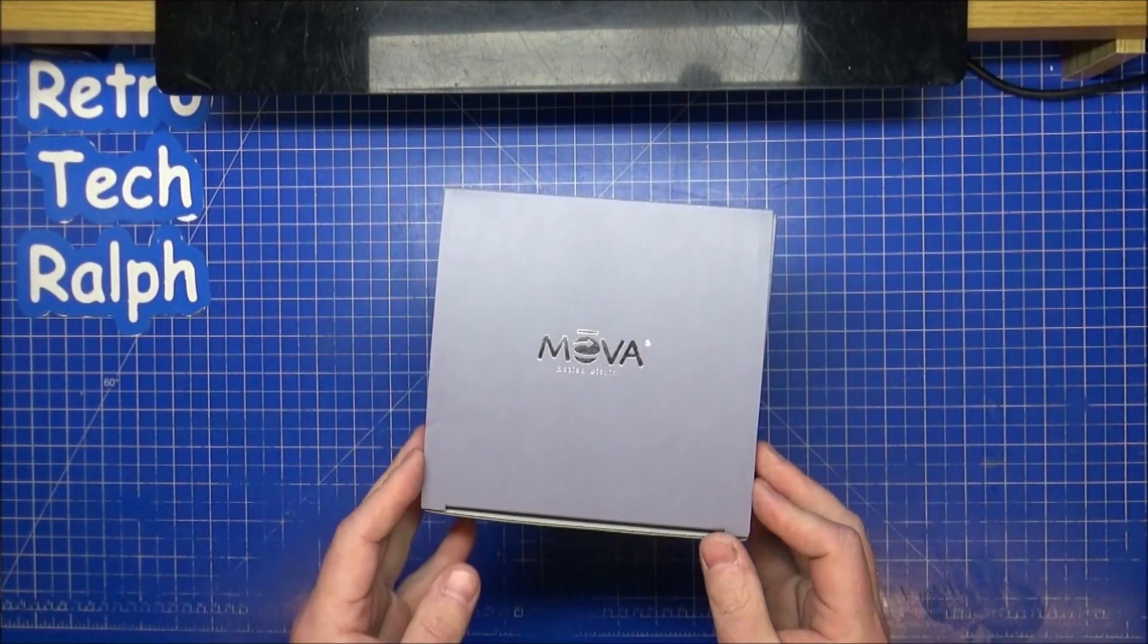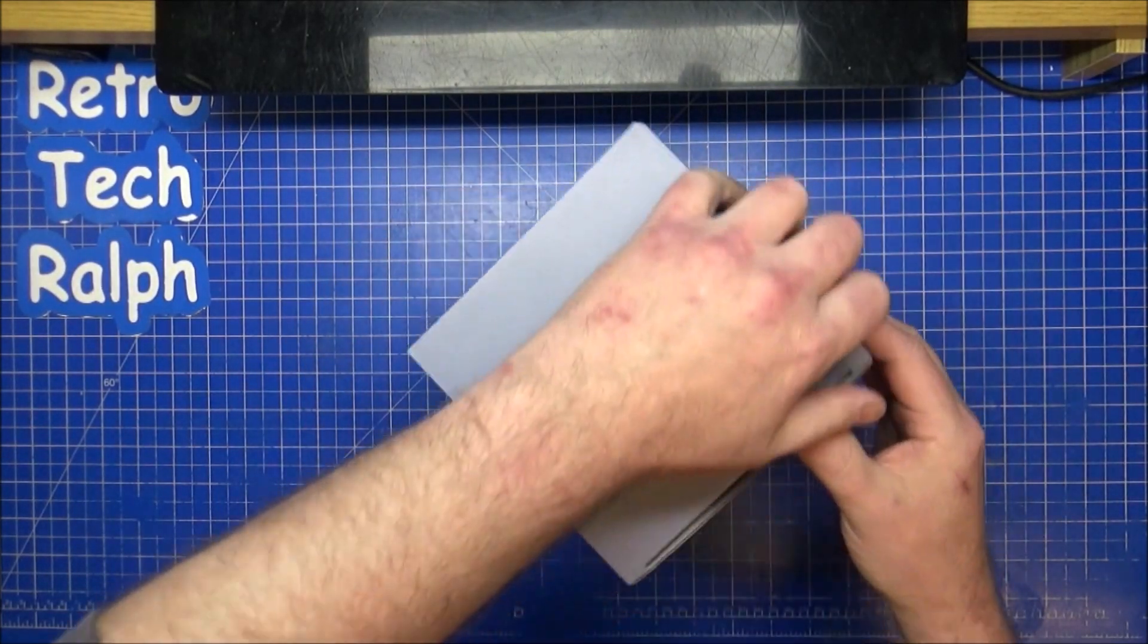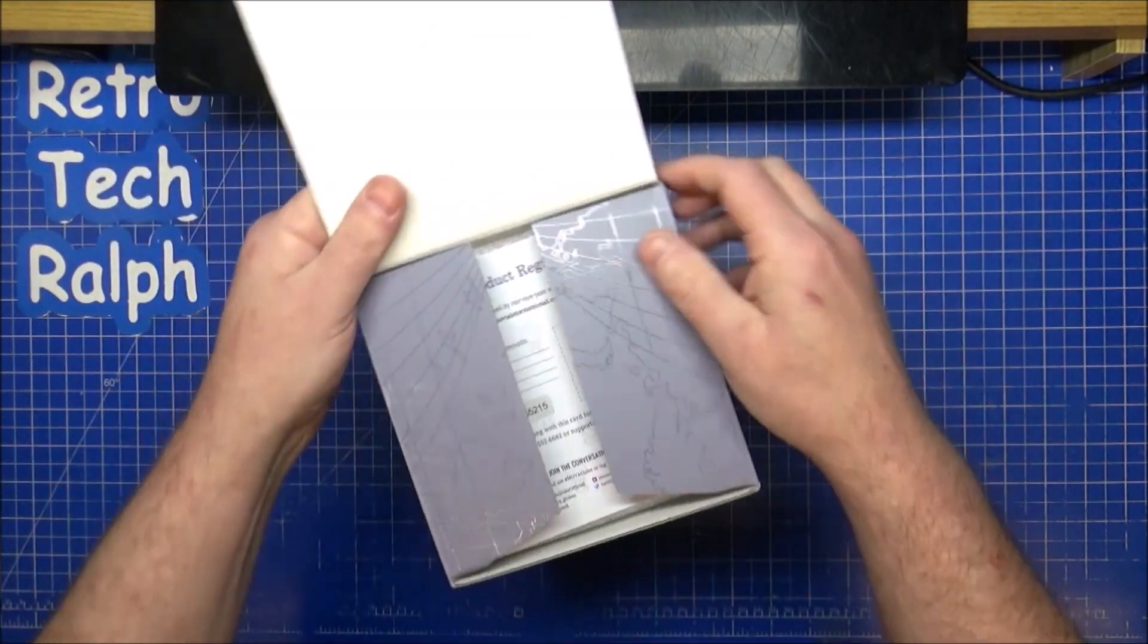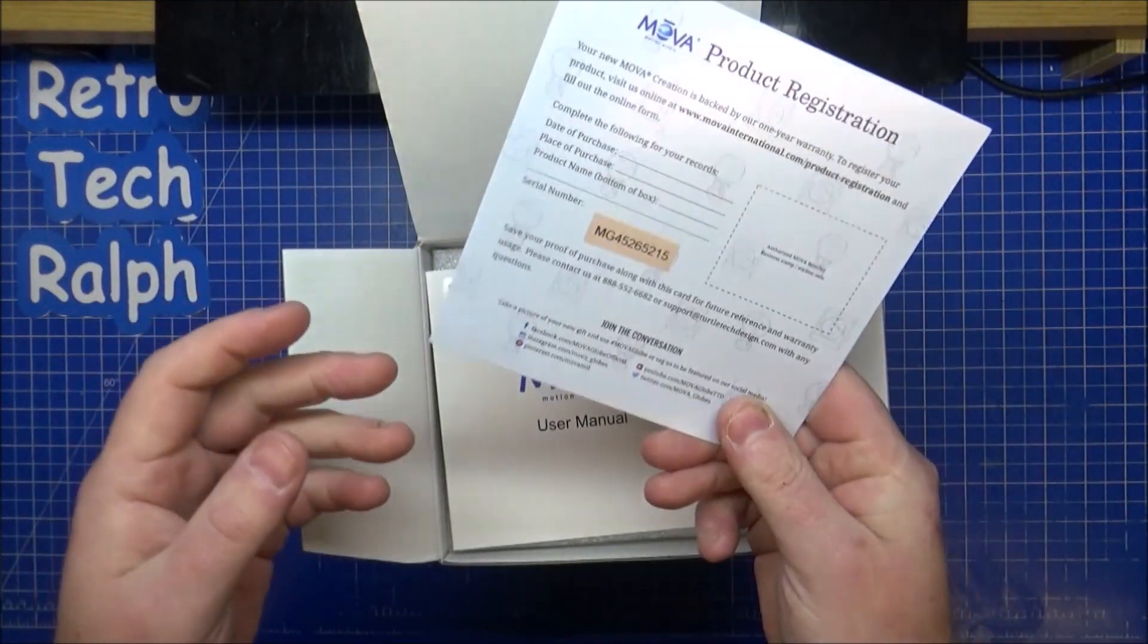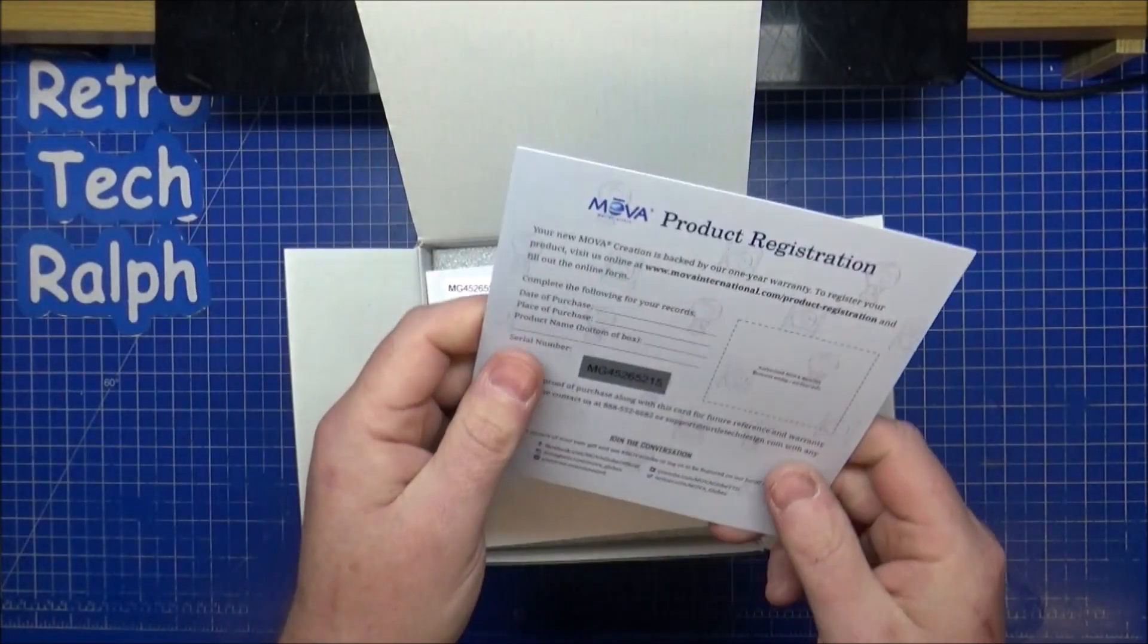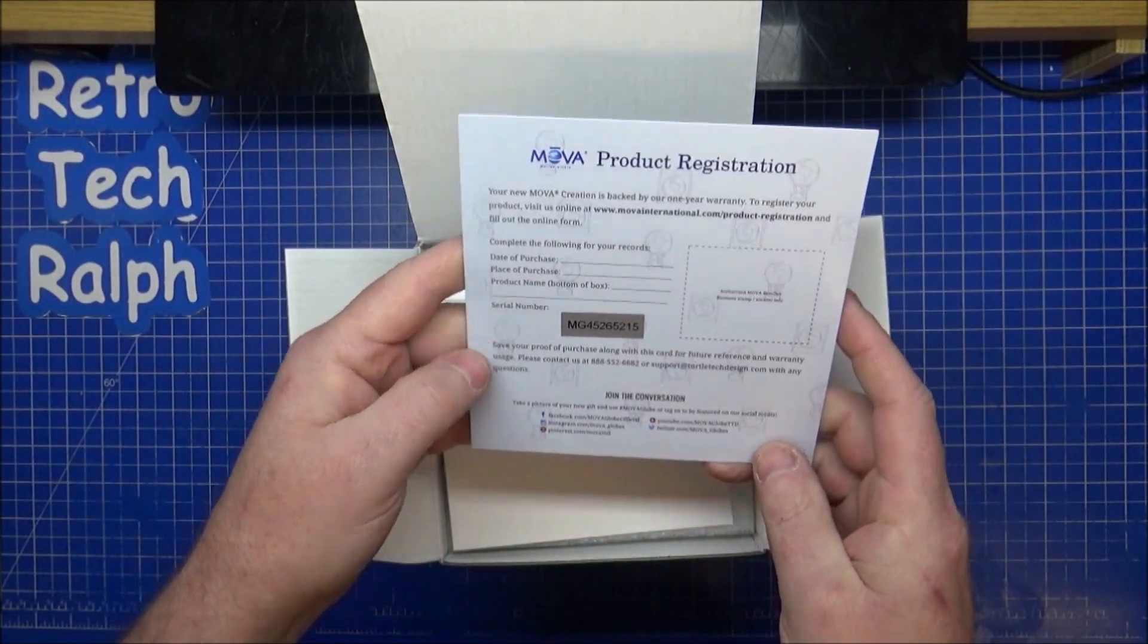Now, I've said before in other videos, they do different stands if you want, but I always stick to the standard one. Product registration card inside there. I haven't actually registered this yet. I've had it a while and I think it might be invalid.